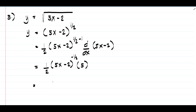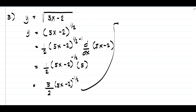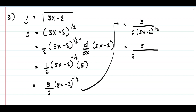Multiplying 1 by 5 gives us 5 over 2 times quantity 5x minus 2 raised to negative 1 half. To eliminate the negative exponent, move 5x minus 2 to the denominator, giving us 5 over 2 times quantity 5x minus 2 raised to positive 1 half. In radical form, this is 5 over 2 times the square root of 5x minus 2.